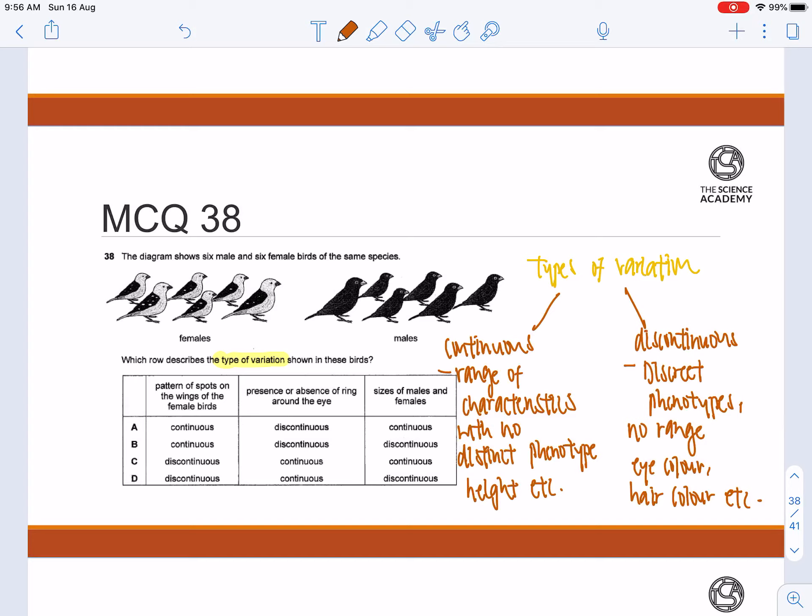Patterns of spots on the wings of the female birds, they are essentially considered continuous variation, not discontinuous, because you can have different number of spots. This one is talking about the different number. So a female can have 2, 3, 4, 5, 6. You can have as many as you want.